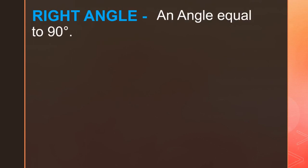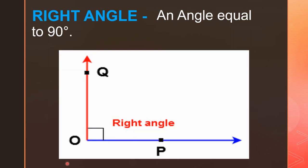Next is the right angle. An angle equal to 90 degrees is called a right angle. An angle of exactly 90 degrees is a right angle. Here, angle QOP is a right angle.